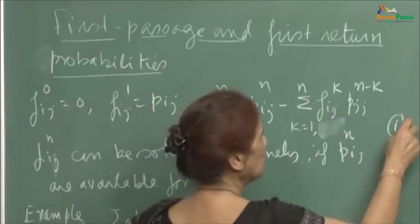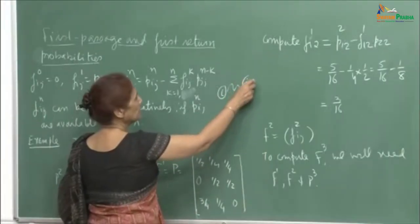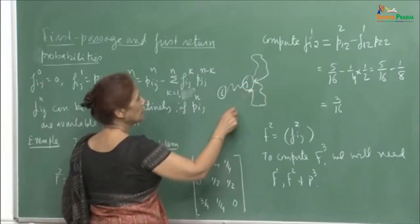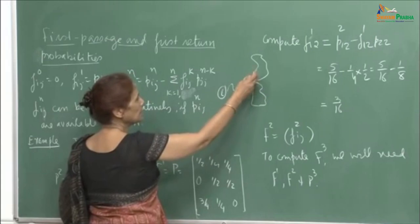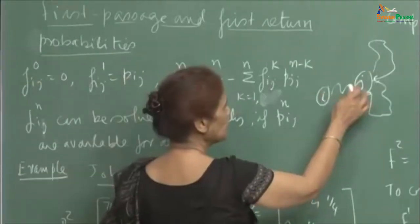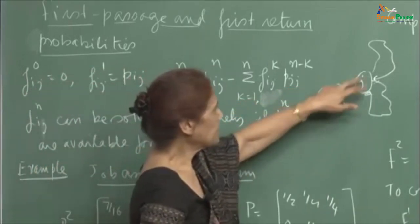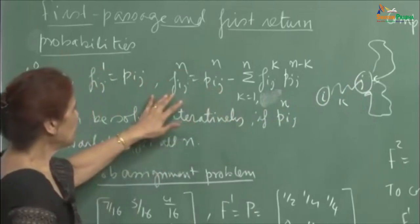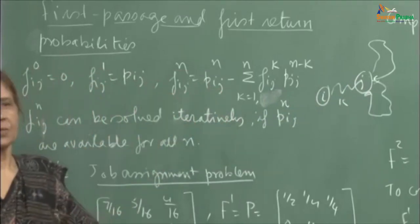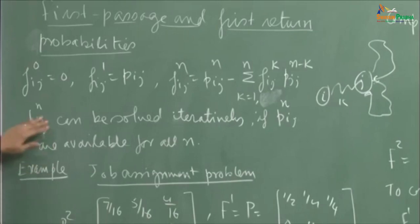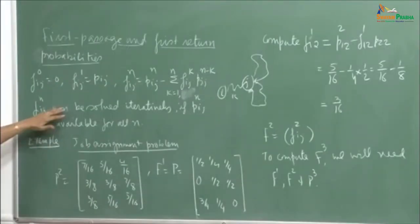That means from i to j, suppose you reach j, then you go back, come back to j, then again go back and come back, and so on. In n minus k steps you are doing this, but in k steps you reach j for the first time from i. So we have to subtract the possibility of traversing all such paths to be able to compute the first passage probabilities. We can solve these iteratively given the initial conditions.